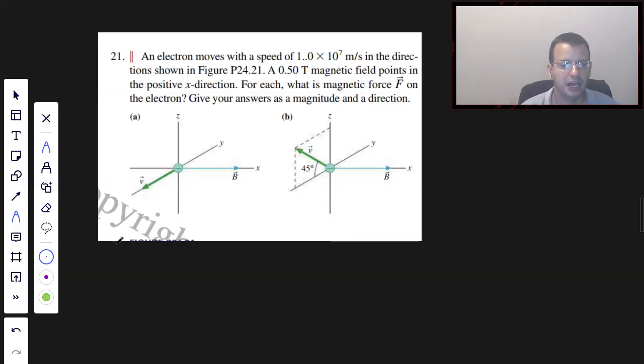An electron moves with a speed of 1×10^7 meters per second in the direction shown in figure 24.21, so this one.